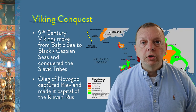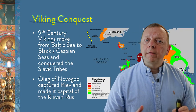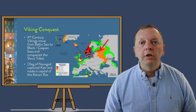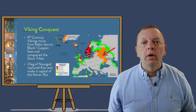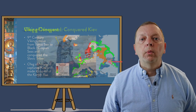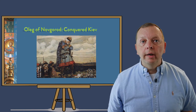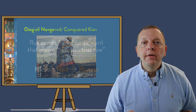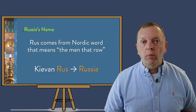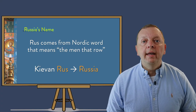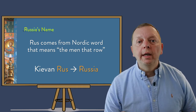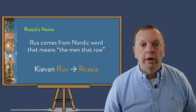In the 9th century, the Scandinavians moved down from the Baltic Sea in the north to the Black and Caspian Seas by boat and took control of the Slavic tribes, establishing their capital where Kiev, Ukraine is today. The name of their empire would come from the Nordic word 'Rus,' which means 'the men that row,' and the Kievan Rus empire was born. It is the Kievan Rus where we get the name Russia today.